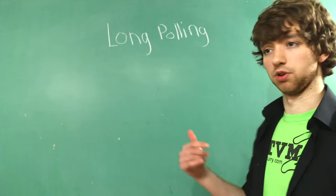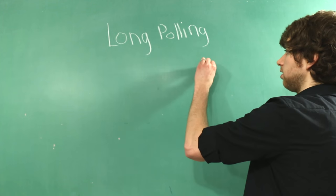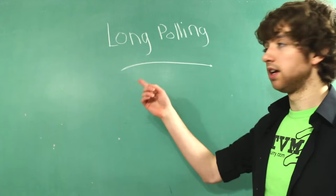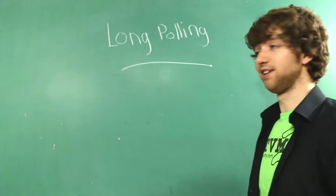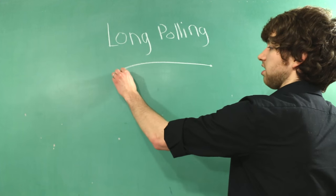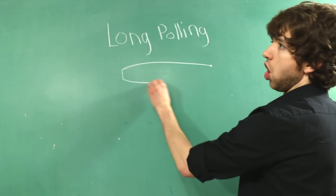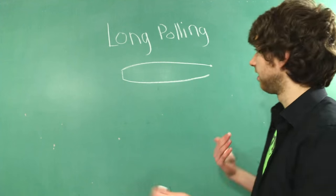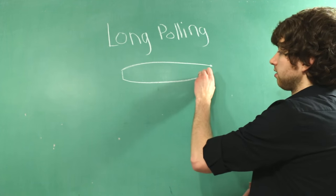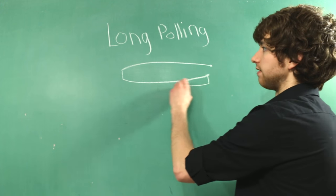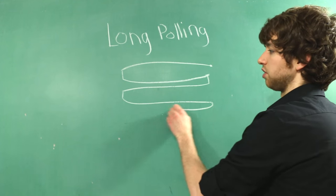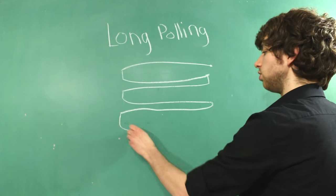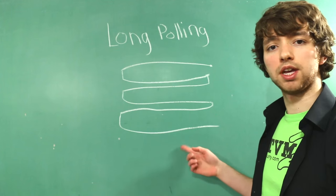So if you remember an Ajax request you have the client and it makes a request and it's like hey bro you got any new data and the server is like let me think about it no we don't and then the client is like okay do you have any more data and he's like no we don't and then it's like oh do you have any more data oh we actually do here have it. Finally we get that data.